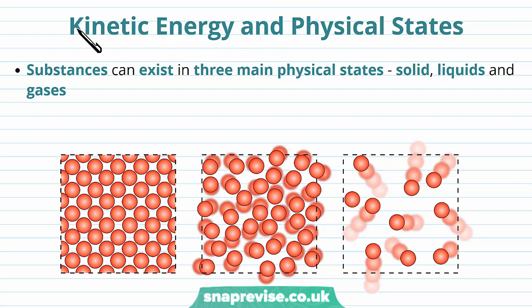We need to understand the relationship between kinetic energy of molecules and the physical states that substances exist in. Any substance, whether that's a particular element or a molecule, can exist in either three main physical states: solid, liquid, or gas. A solid is where the particles are very compacted together in a tight space and they're stuck in a rigid position so the solid doesn't flow or move.